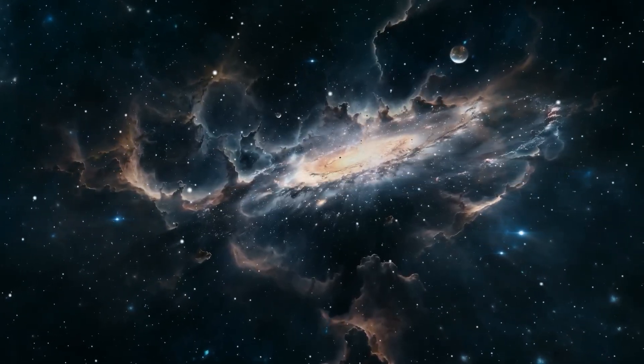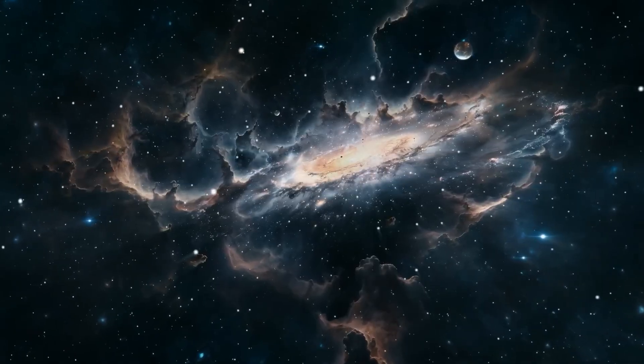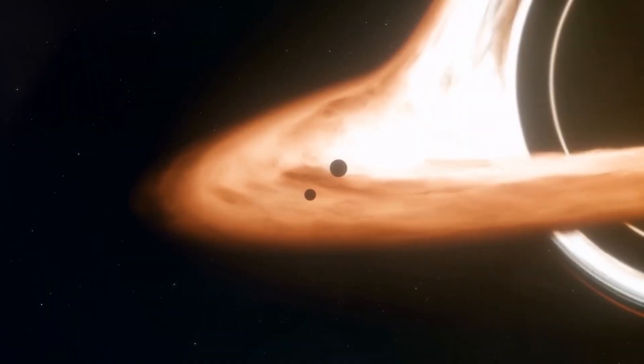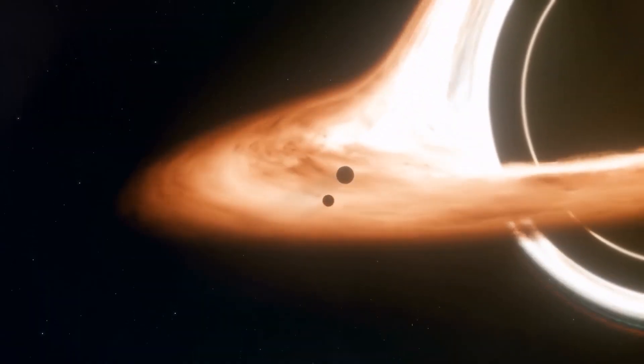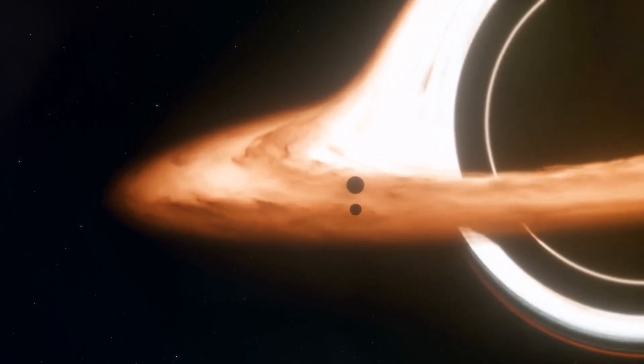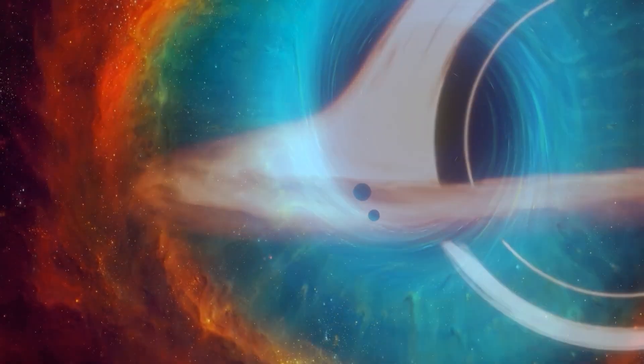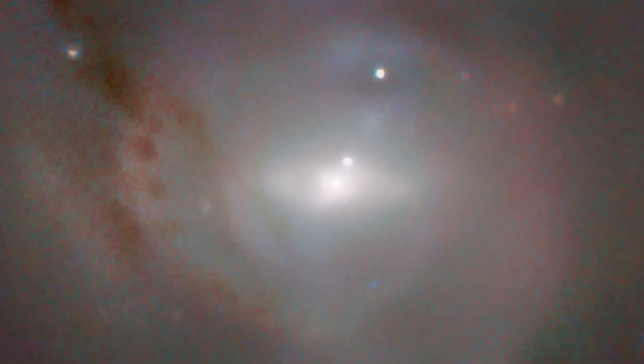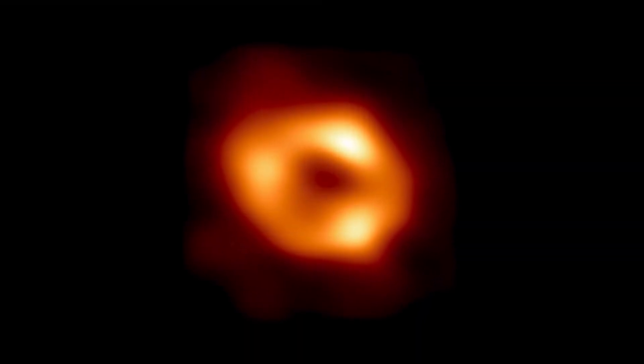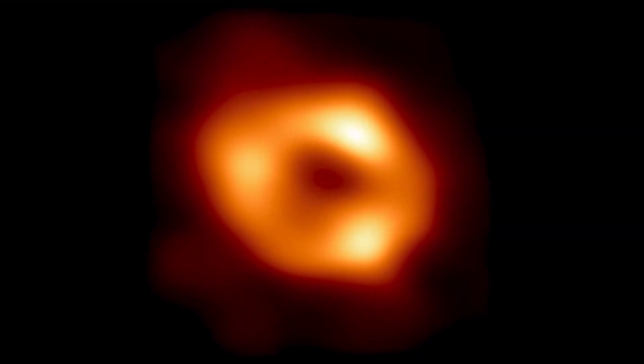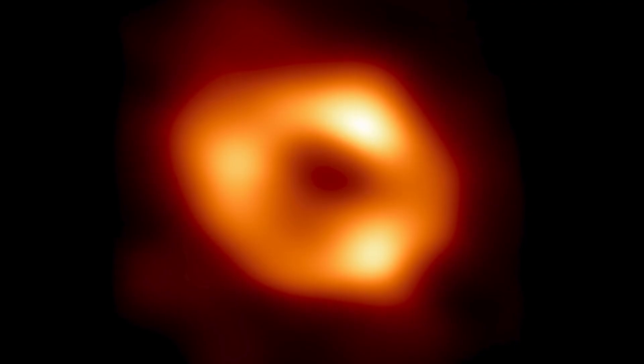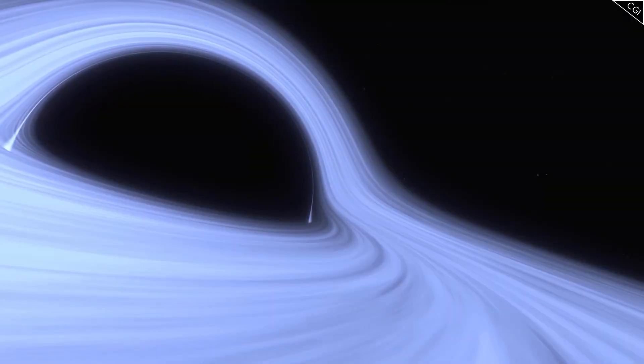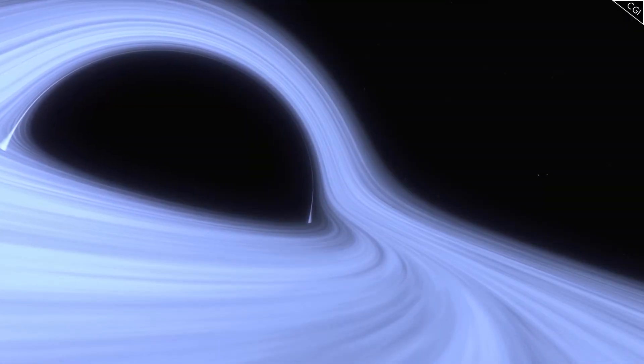This escaping particle carries away a tiny piece of the black hole's energy, and so the black hole slowly evaporates. Hawking called this phenomenon Hawking radiation. It completely changed our perception of these absolute objects. The black hole, once seen as an eternal prison, now had a life cycle. It was a beautiful and terrifying idea: even the most powerful objects in the universe cannot escape time.